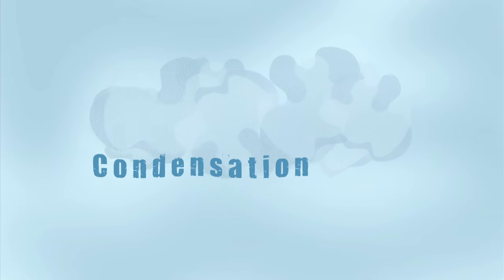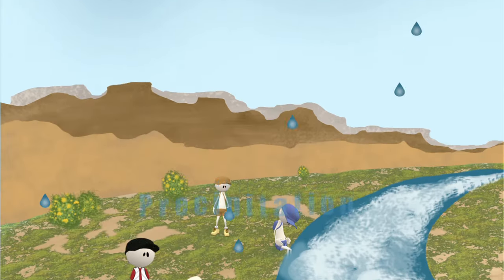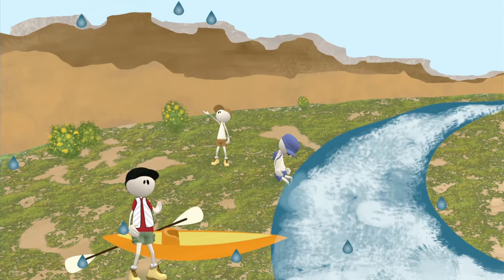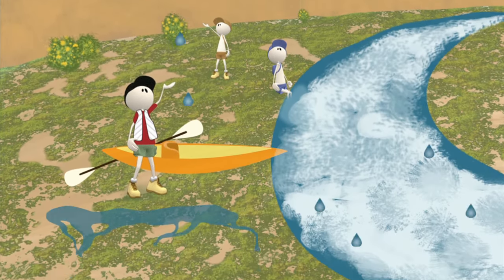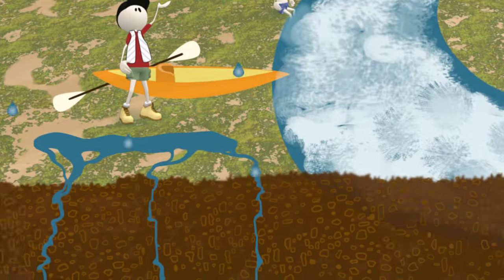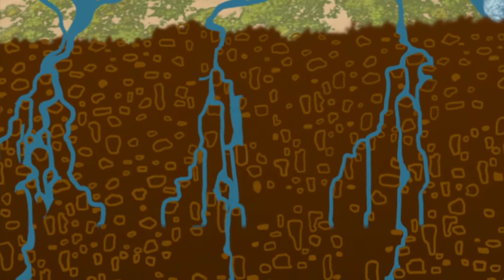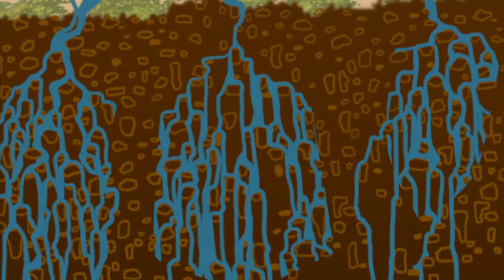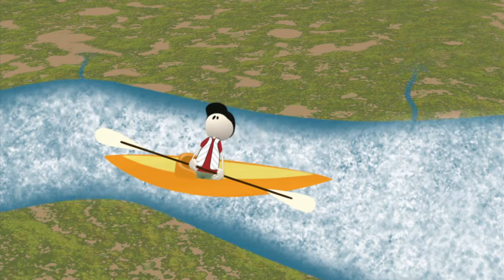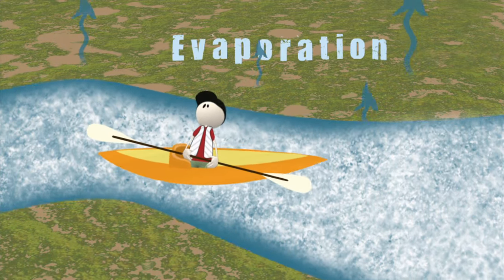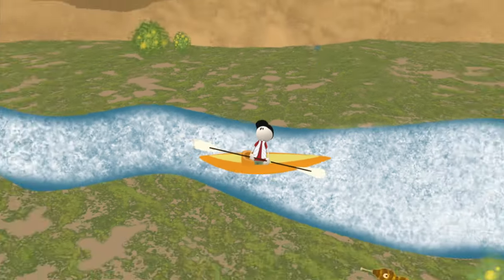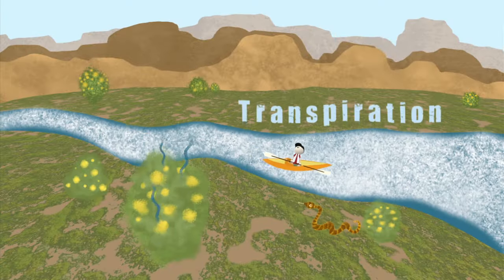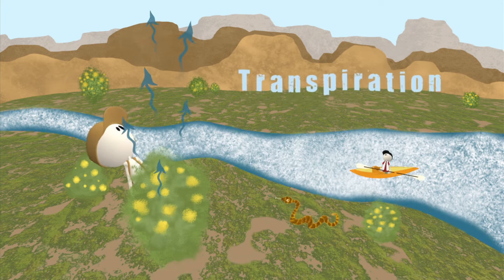Here's a quick review: as water in the atmosphere condenses, it forms clouds, usually resulting in precipitation like rain. This rain creates runoff which flows along the ground or sinks into the ground as groundwater. Water gets back into the atmosphere through evaporation of liquid water or the transpiration of plants, starting the process all over again in an endless cycle.